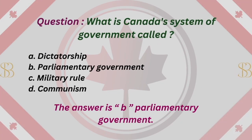Question: What is Canada's system of government called? A. Dictatorship. B. Parliamentary government. C. Military rule. D. Communism. The answer is B. Parliamentary government.